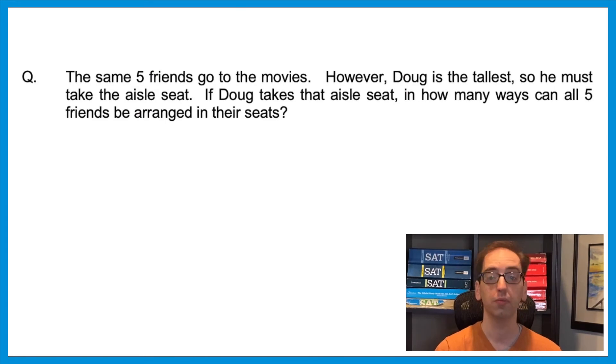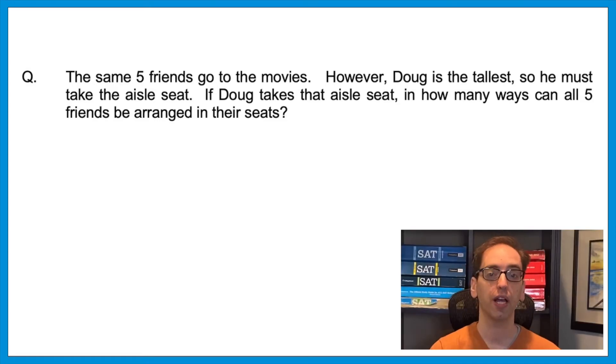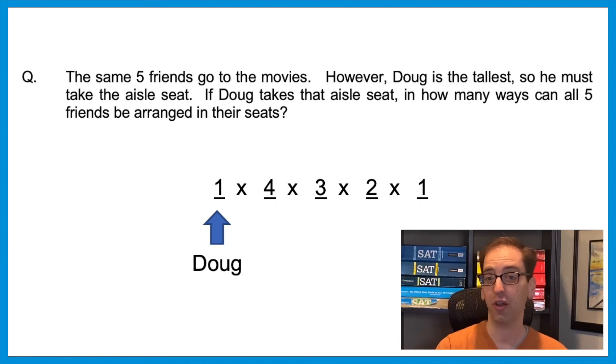But now let's kick it up a notch and give it another restriction. The same five friends go to the movies. However, Doug is the tallest, so he must take the aisle seat. If Doug takes the aisle seat, in how many ways can all five friends be arranged in their seats? I'll give you a minute. Press pause. Give it a try. So if you can visualize five blank spaces, think about the numbers that would go in each spot. Doug must take the aisle seat. So that first seat is no longer five possibilities. Now it's one possibility. Doug has to go there. And then once Doug is there, the rest of the numbers would be the same. Four times three times two times one. It would be one times four, three, two, one. So the big theme of the arrangement questions is to always multiply the possibilities. You just need to be very careful about the terms and whether or not they can repeat. Again, these arrangement questions have become a particular favorite on the ACT over the last year or two.